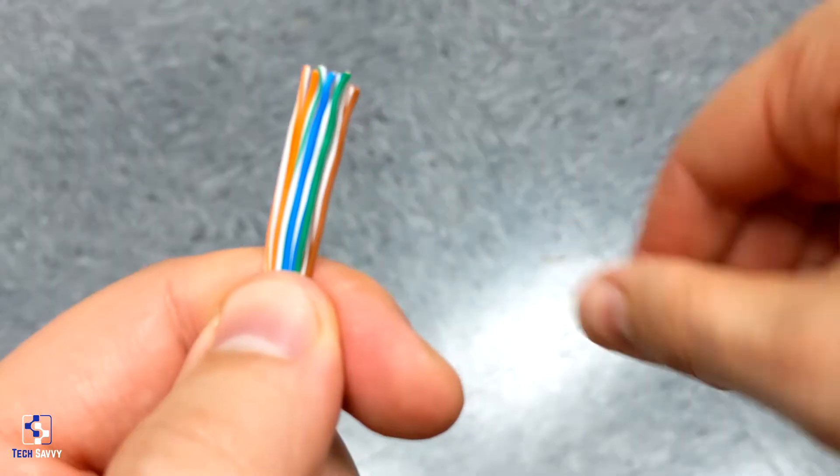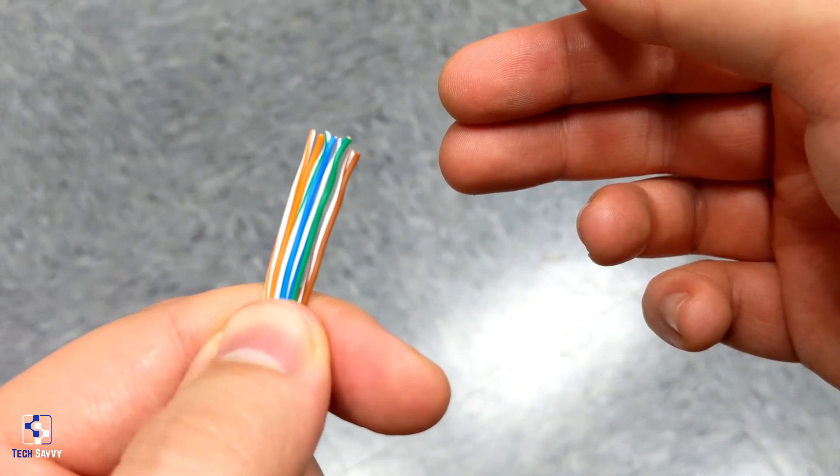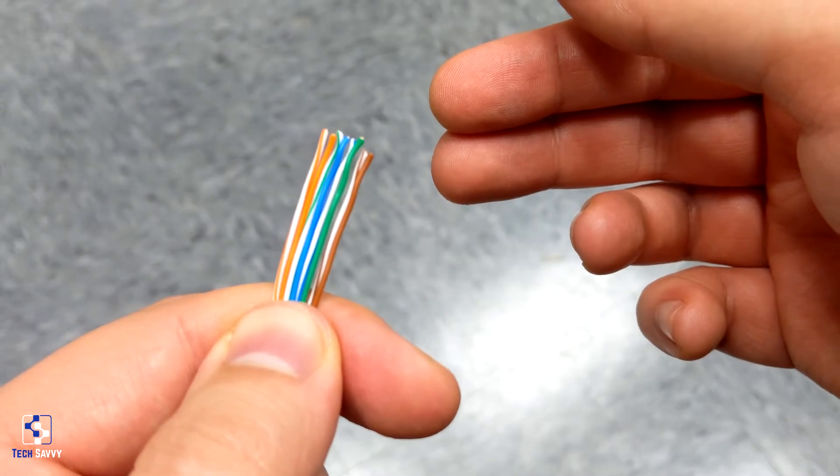Now let's check, starting from the left: orange-white, orange, green-white, blue, blue-white, green, brown-white, brown.